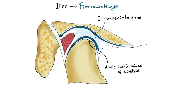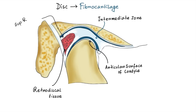The articular disc is attached posteriorly to a region of loose connective tissue that is highly vascularized and innervated. This tissue is known as the retrodiscal tissue or posterior attachment. Superiorly, it is bordered by a lamina of connective tissue that contains many elastic fibers — the superior retrodiscal lamina. The superior retrodiscal lamina attaches the articular disc posteriorly to the tympanic plate. At the lower border of the retrodiscal tissue is the inferior retrodiscal lamina, which attaches the inferior border of the posterior edge of the disc to the posterior margin of the articular surface of the condyle.